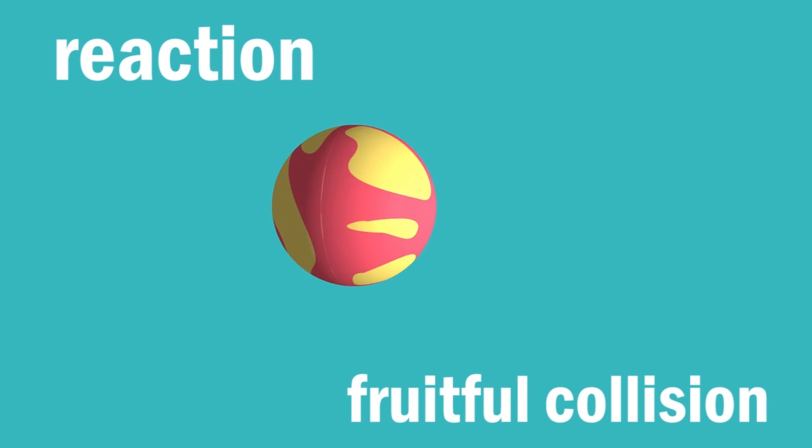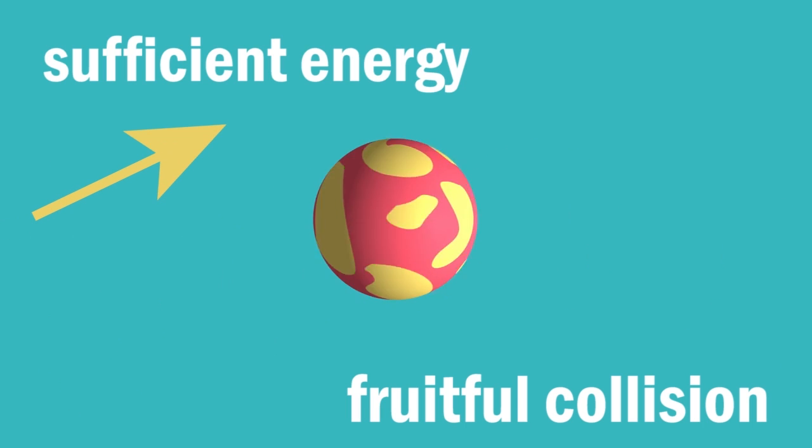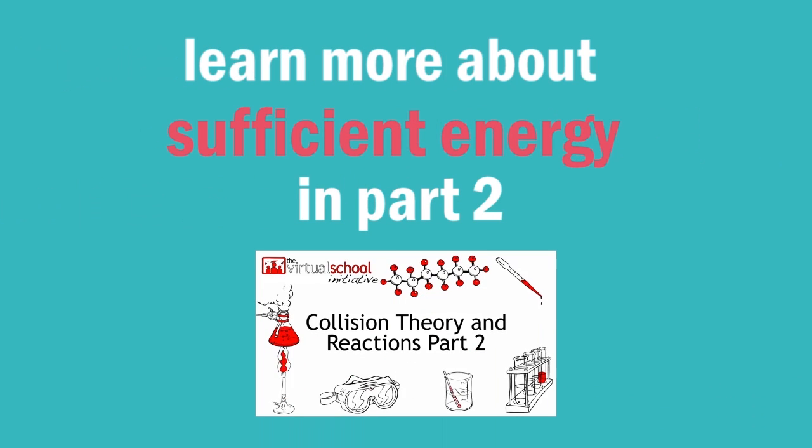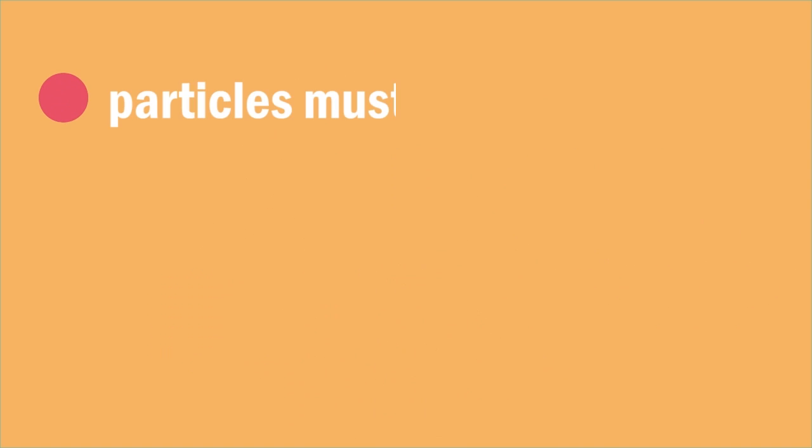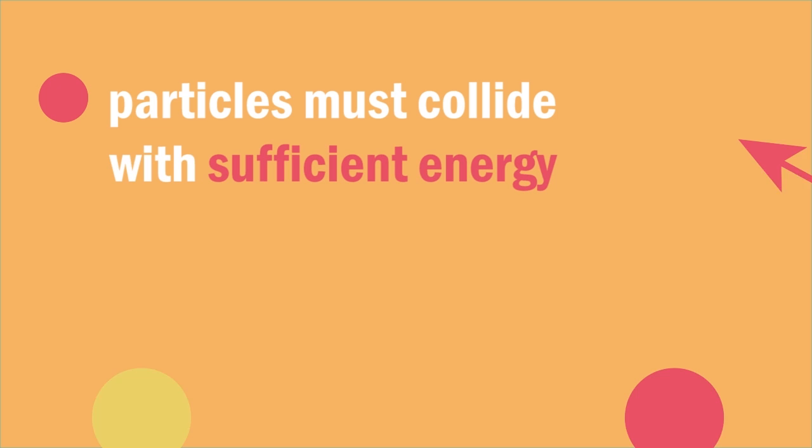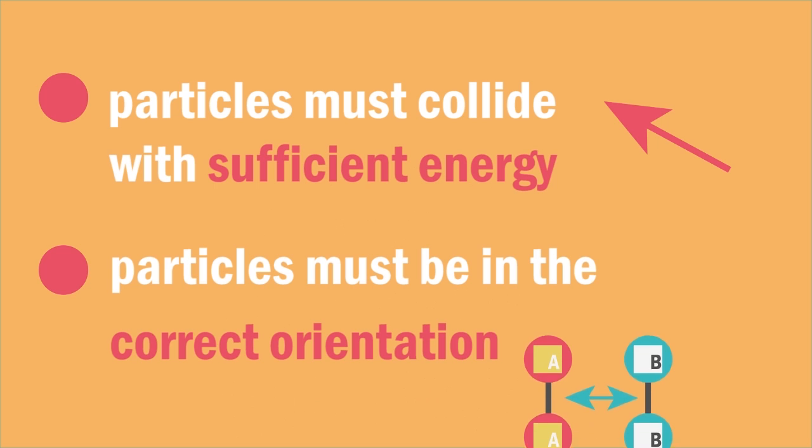We call a collision that results in a reaction a fruitful collision. So for the collision to be fruitful, the reacting particles must collide with sufficient energy. So to recap, for a reaction to occur, particles must collide with sufficient energy and particles must be in the correct orientation.